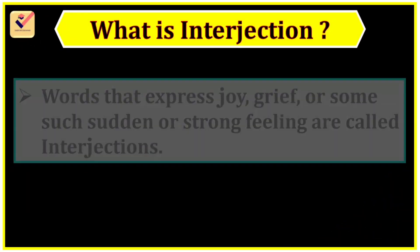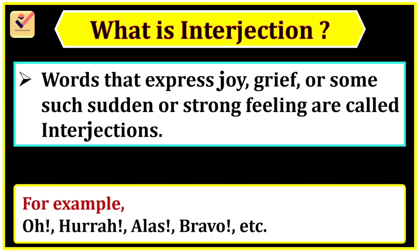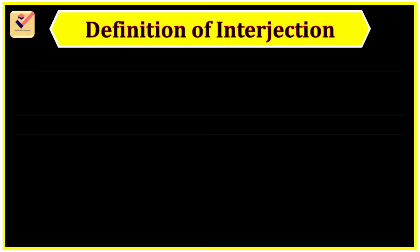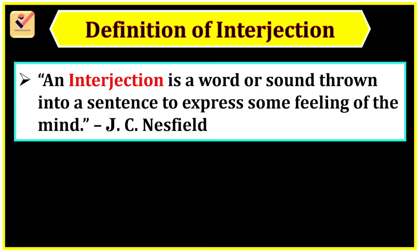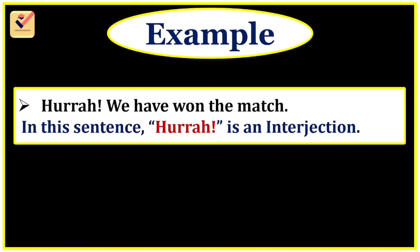What is an Interjection? Words that express joy, grief, or some such sudden or strong feeling are called interjections. For example: oh, hurray, alas, bravo, etc. According to J.C. Nesfield, an interjection is a word or sound thrown into a sentence to express some feeling of the mind. According to Ren and Martin, an interjection is a word which expresses some sudden feeling. For example: 'Hurray, we have won the match.' — hurray is an interjection.